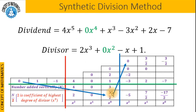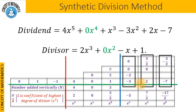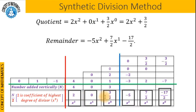Multiply 3 halves by 0, 1, and negative 1 respectively to get those numbers. Add column-wise to get negative 5, 7 halves, and negative 17 halves. This time, do not divide by 2, since these values form the remainder and are not involved in the division. The quotient coefficients are 2, 0, and 3 halves, giving us 2x squared plus 0 times x plus 3 halves. The remainder is negative 5x squared plus 7 halves x minus 17 halves.